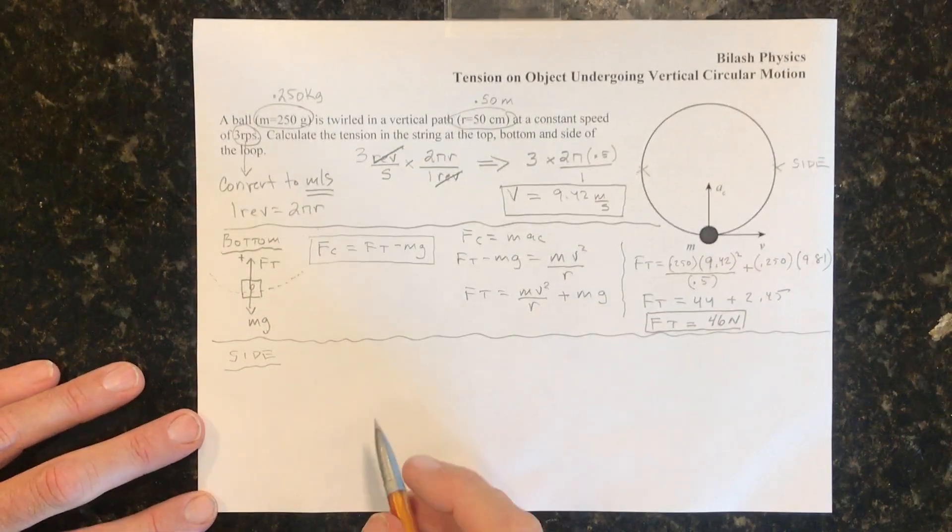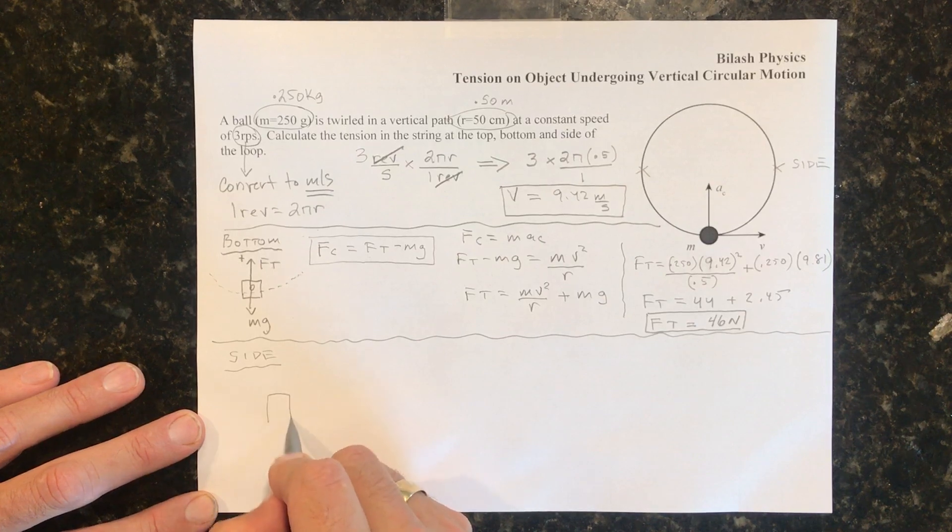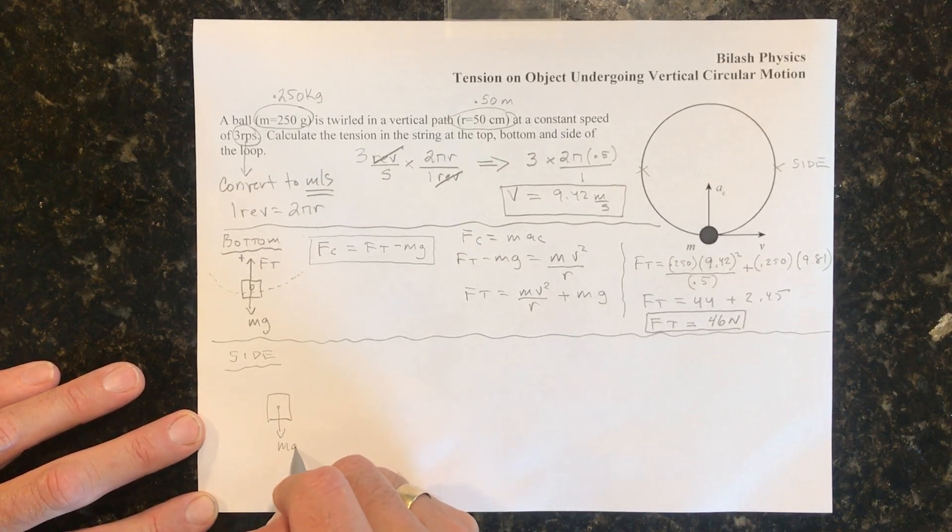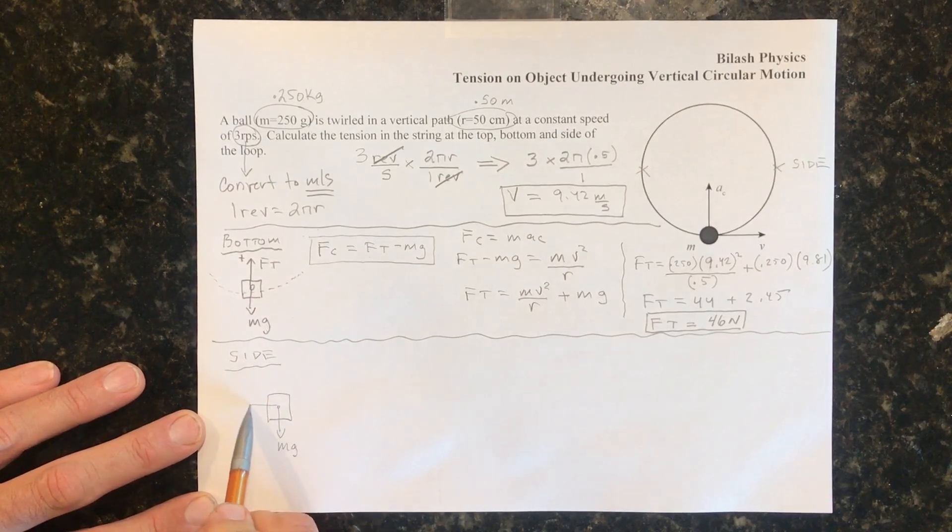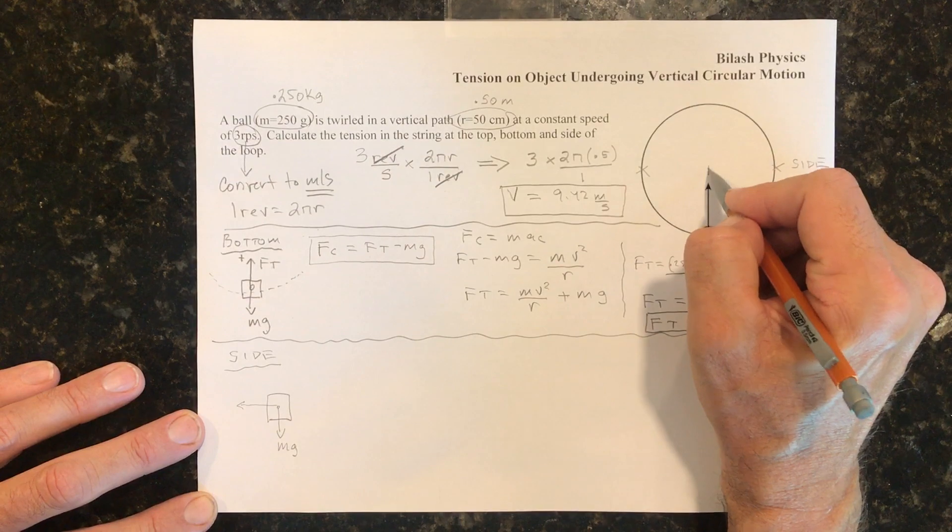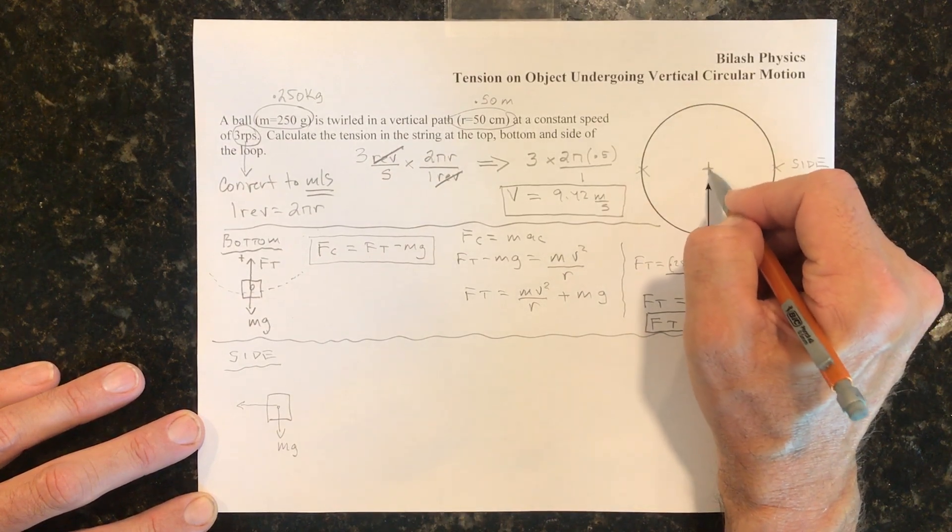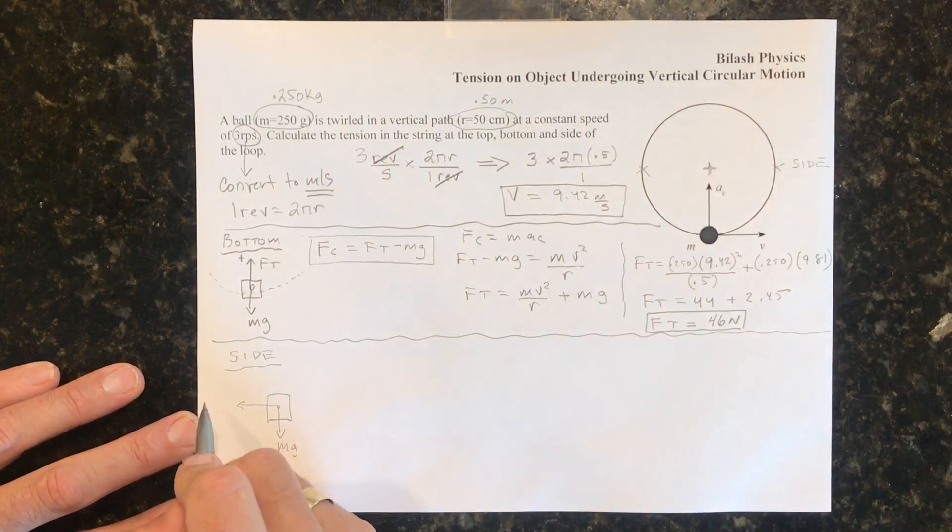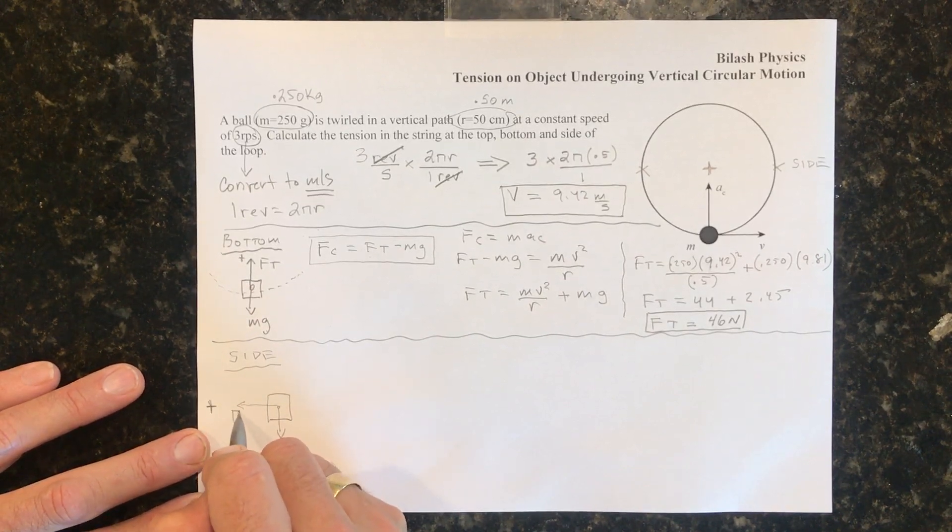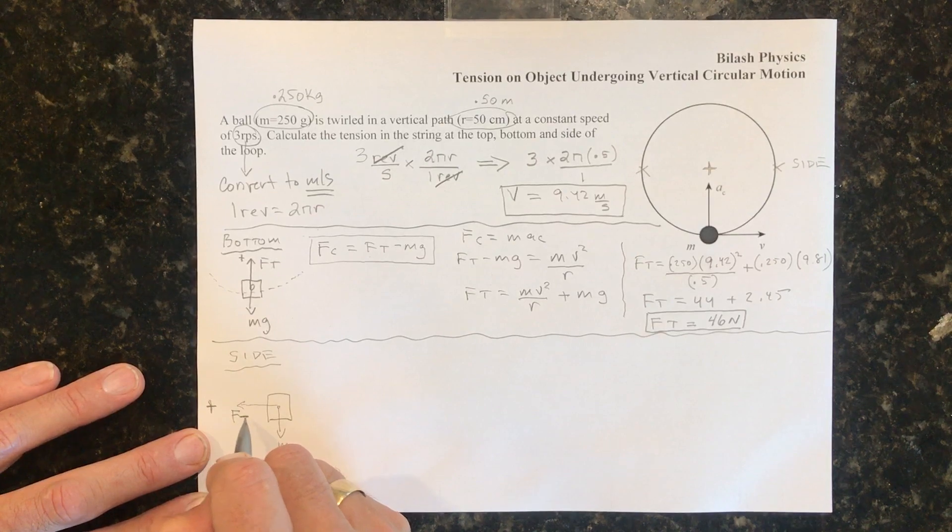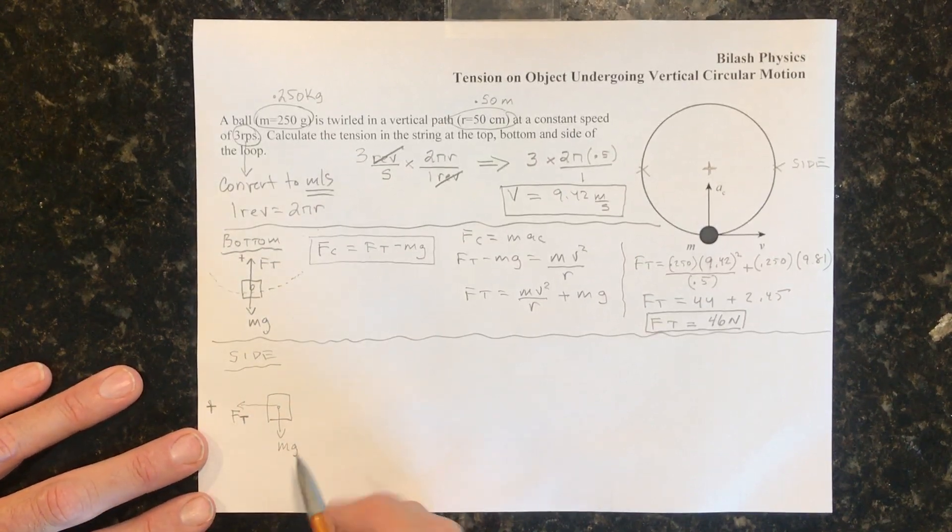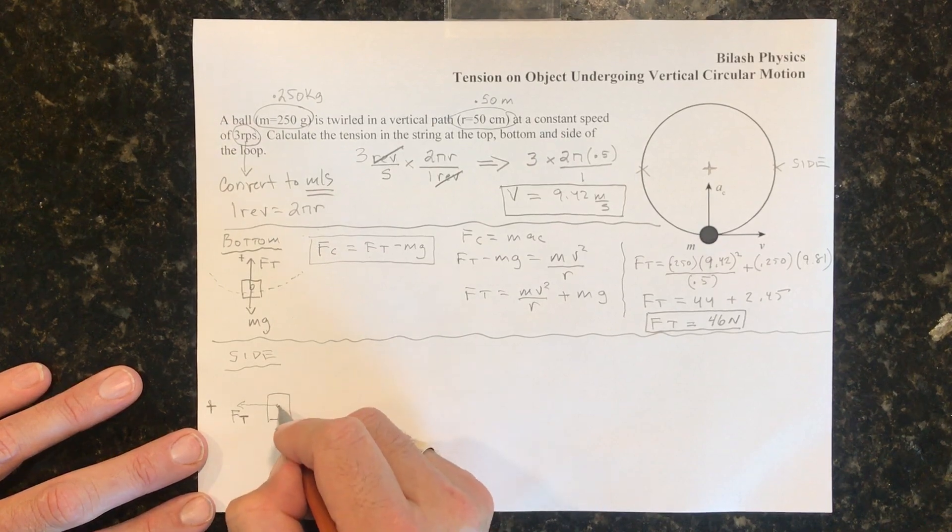We draw the free body diagram. So here we are. And we have mg pointing down. And we have now the string pointing like that towards the center. Remember, this is the center of the circle right there. So this is the positive direction. And this would be the tension. The string is pointing towards the center at all times.